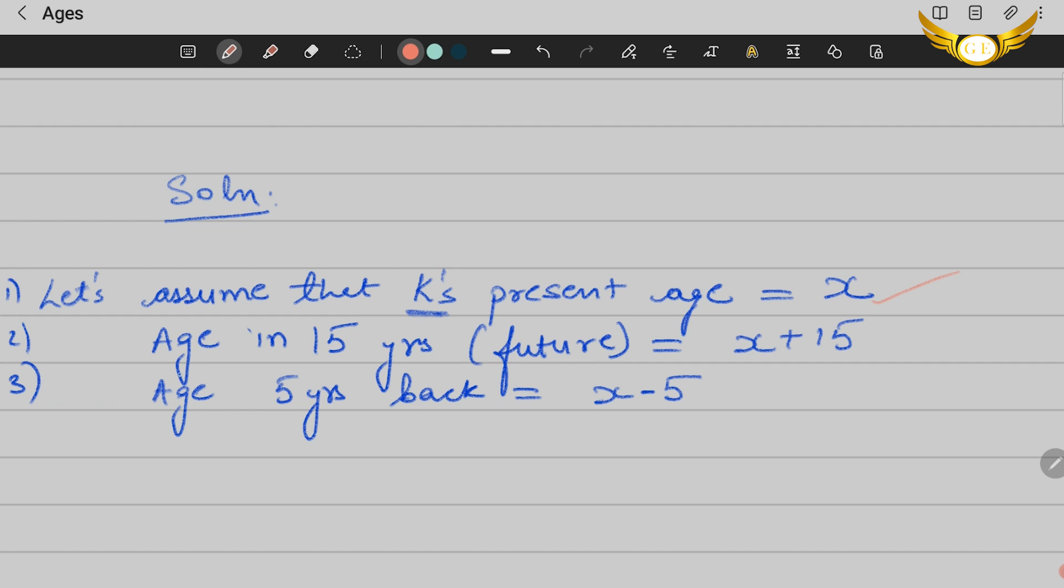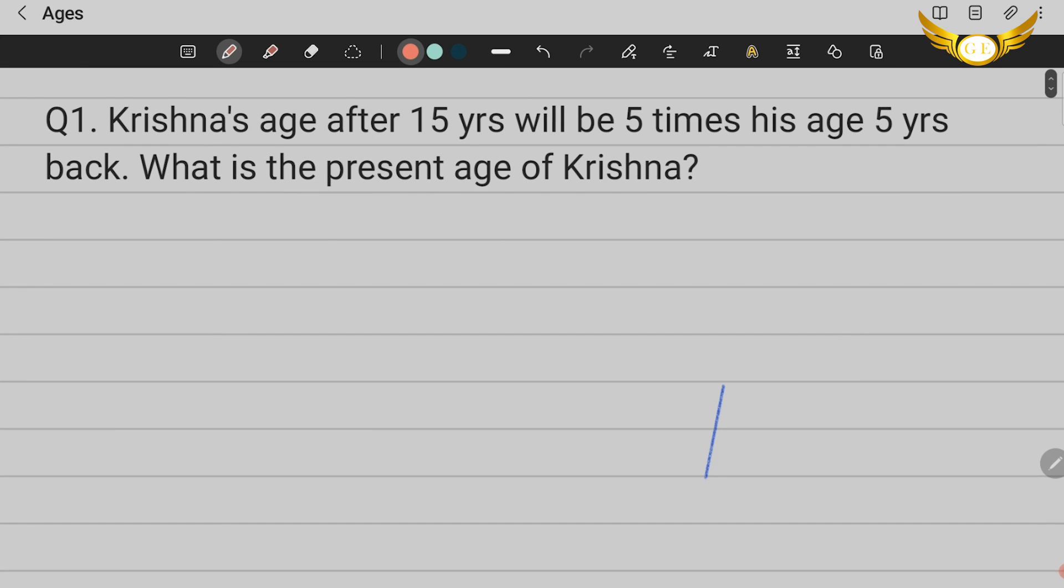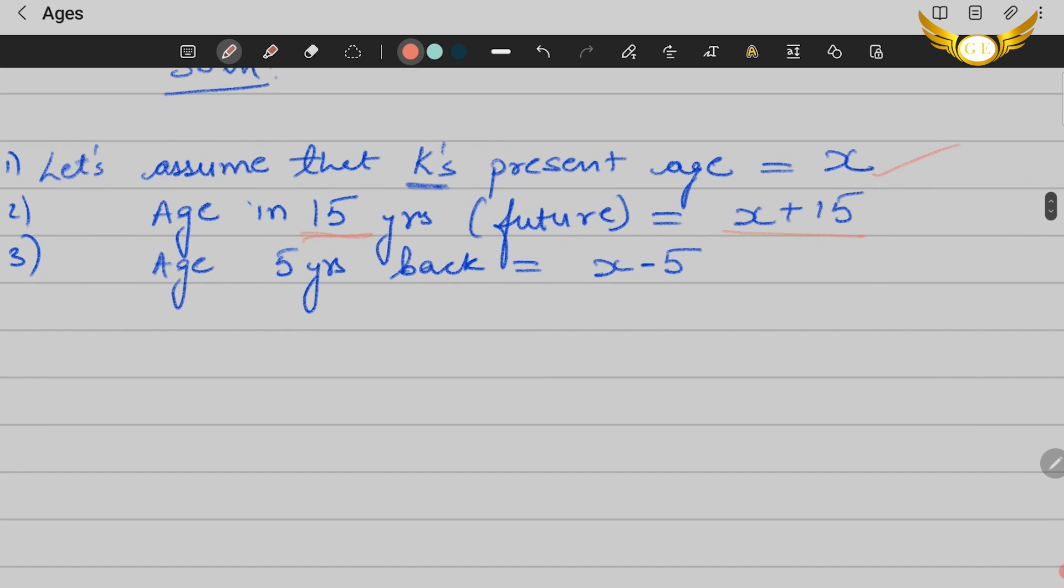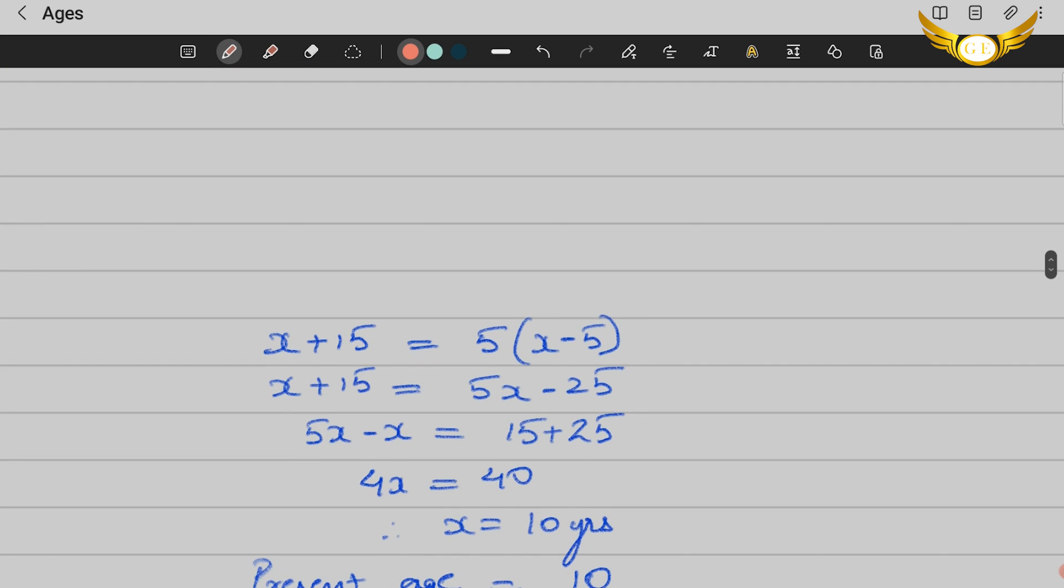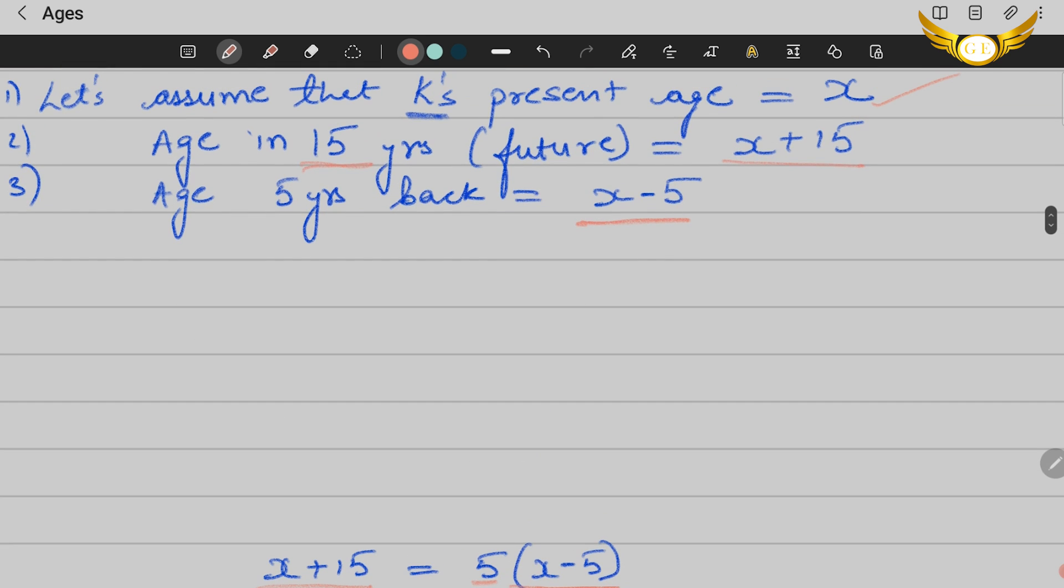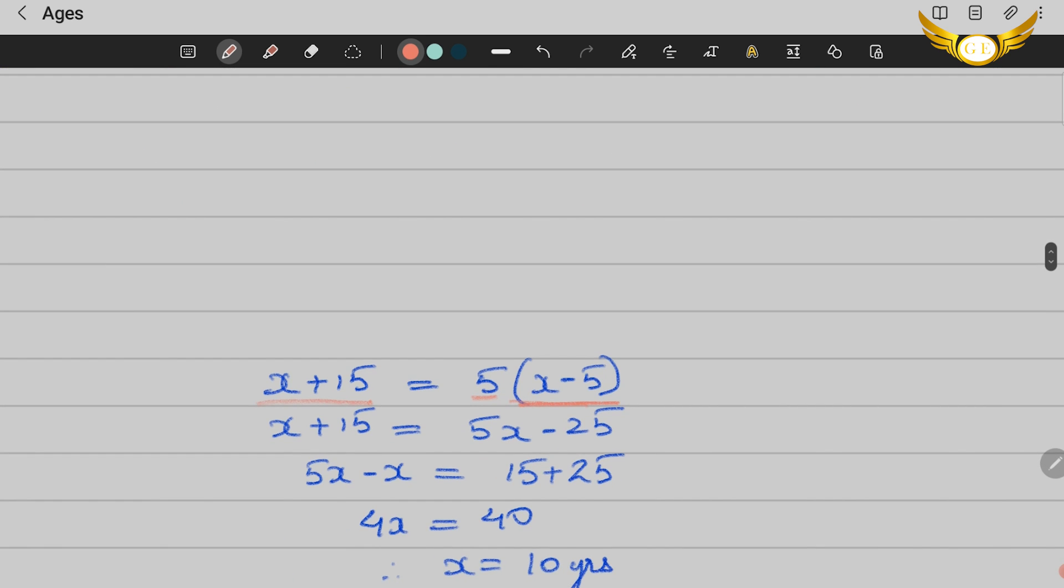His age in 15 years is X plus 15, and his age five years ago is X minus 5. The equation is: X plus 15 equals five times X minus 5. You substitute and make it an equation.